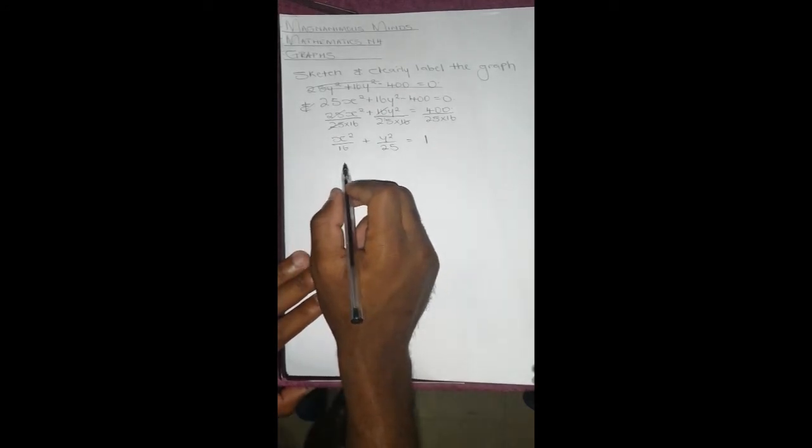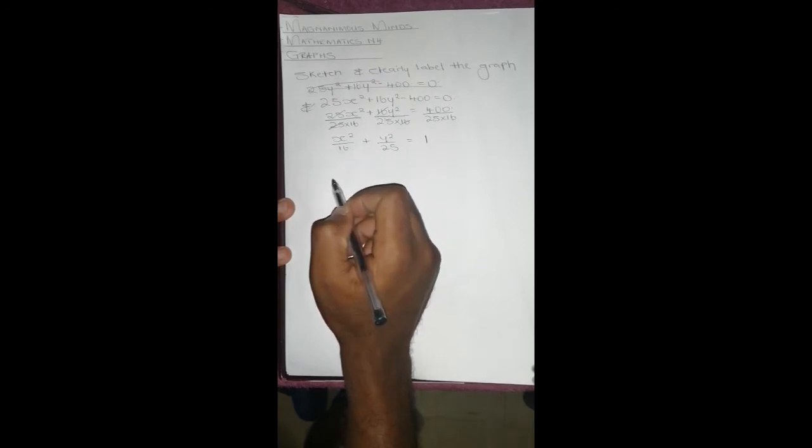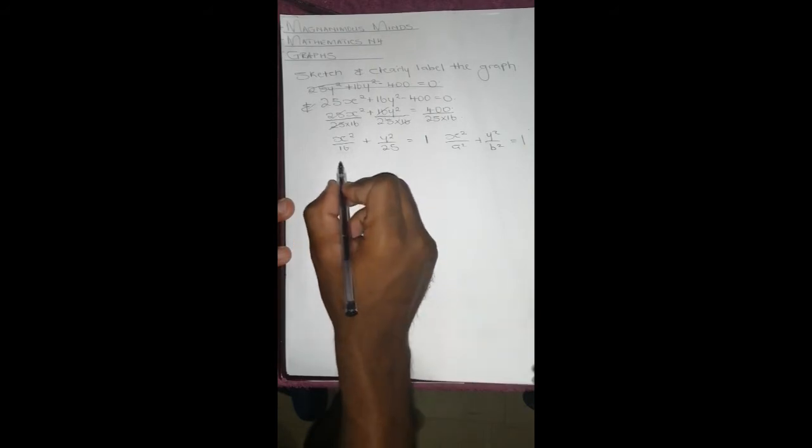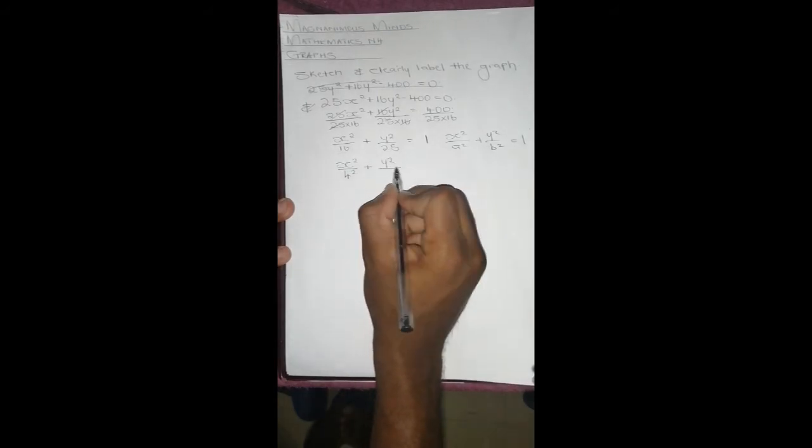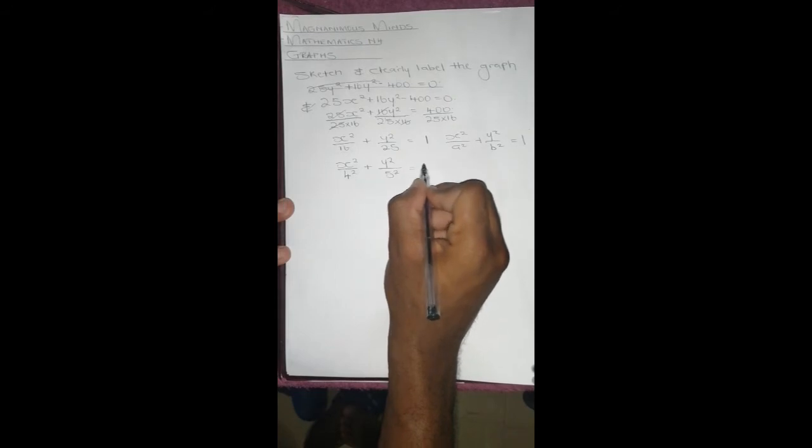After doing that, we have to put this into something to the power 2, as that's the standard form for an ellipse which says x²/a² + y²/b² = 1. To do that, we'll realize that 16 is 4², so we're going to have x²/4². 25 is 5², so it's going to be y²/5² = 1.